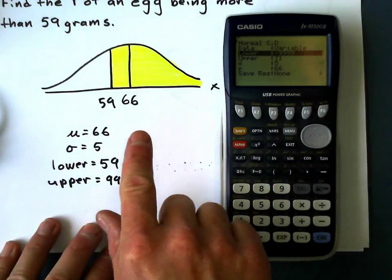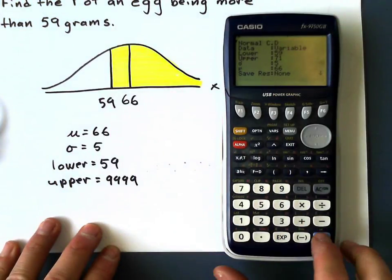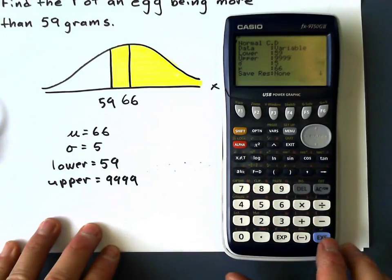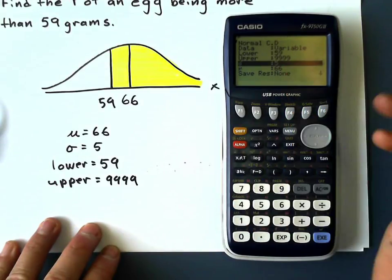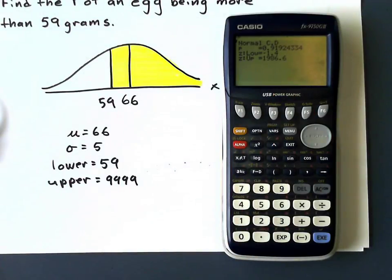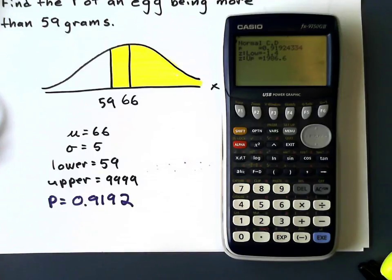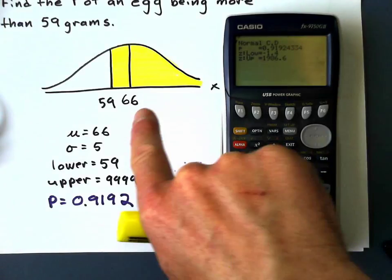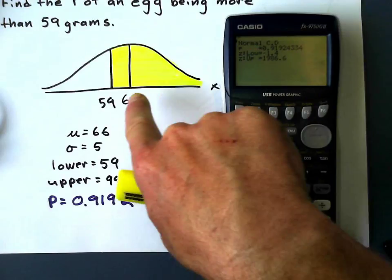Go back to lower and I'm going to enter 59 for my lower value, 59 execute. My upper value 9999, execute. These are the same, so execute. And I get a value of about 91% for the probability to four decimal places: 0.9192.